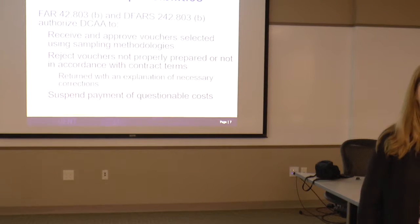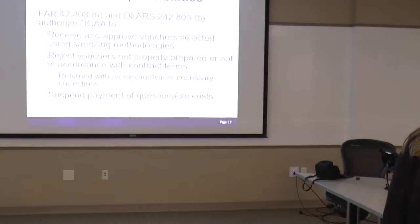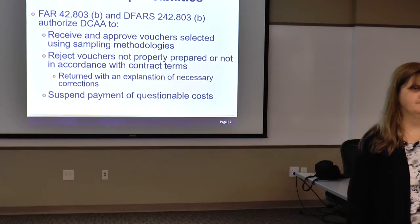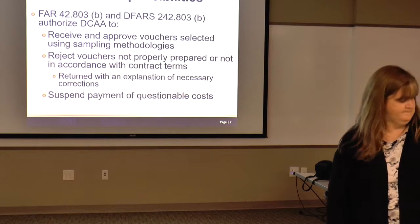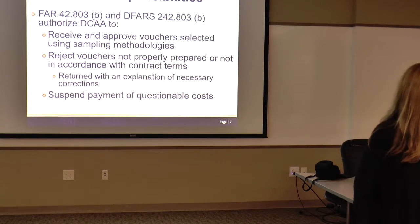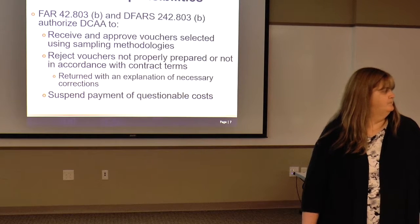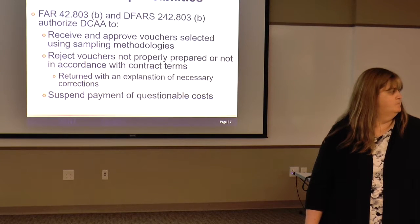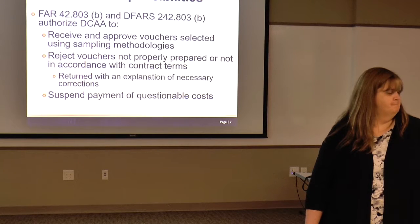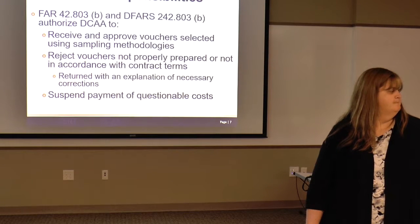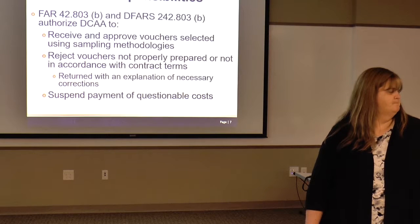Obviously, if we have concerns about a contractor's accounting system, we look at 100% of the vouchers. When we say we look at vouchers — when you start billing on a public voucher, we'll probably send you a letter asking you to attach certain items when you submit. Because we have to review that information before approving the voucher, and if we don't get the supporting documentation, we have to reject the voucher. I'm going to go through the Public Voucher Assessment Tool that we provided and handed out, which tells you what our process is and what we go through.